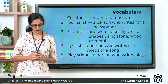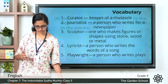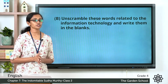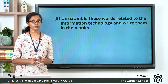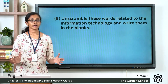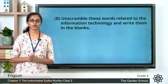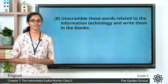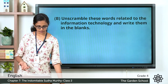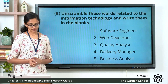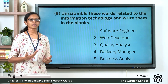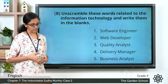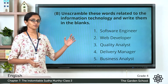Now the next section: unscramble these words related to information technology and write them in the blanks. You can see some words here related to information technology where the letters are scrambled. You have to unscramble the letters to get a meaningful word. Please pause this video, finish the activity, and come back. The answers are: the first one is software engineer, the second is web developer, the third is quality analyst, the fourth is delivery manager, and the fifth is business analyst.